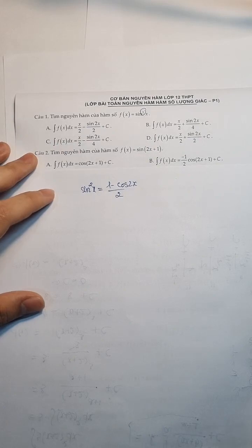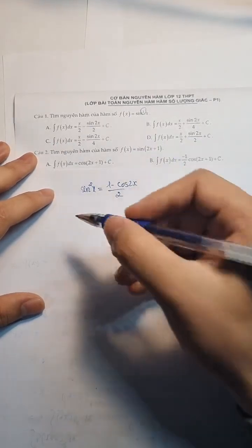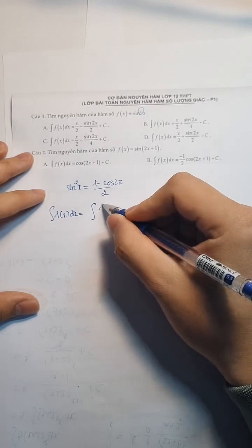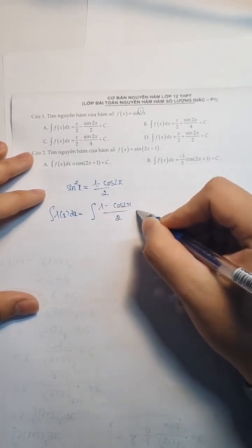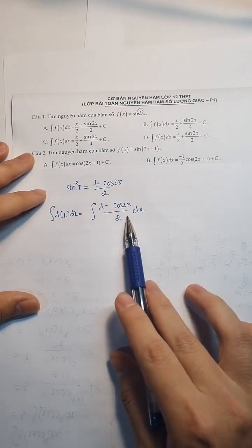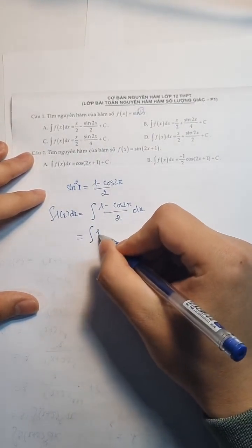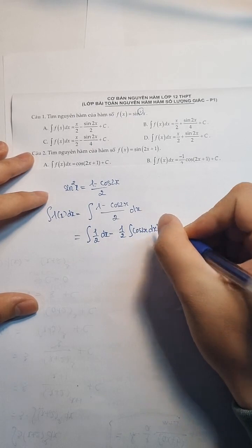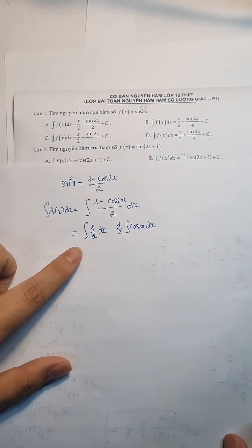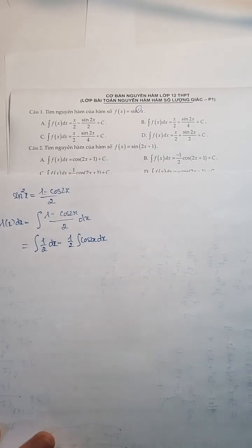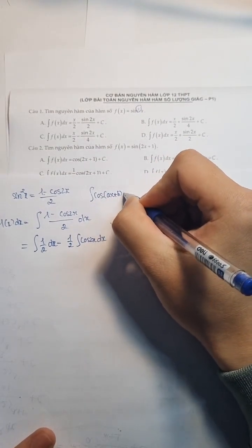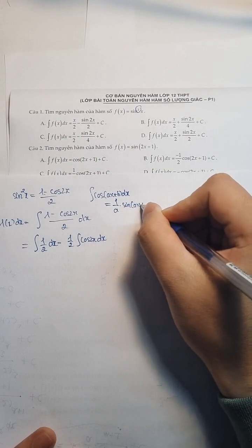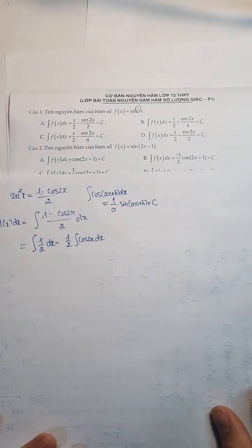Các bạn đưa về đây. Ta có là nguyên hàm của f(x) dx thì nó sẽ bằng nguyên hàm của [1 - cos(2x)] trên 2 dx. Đến đây thì anh sẽ tách riêng ra: nó có là nguyên hàm của 1/2 dx trừ 1/2 nguyên hàm của cos(2x) dx. Đến đây thì các bạn lại dùng cái công thức: nguyên hàm của cos(ax+b) dx thì nó bằng 1/a nhân với sin(ax+b) và cộng C.